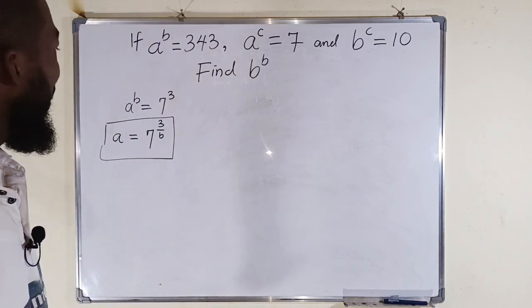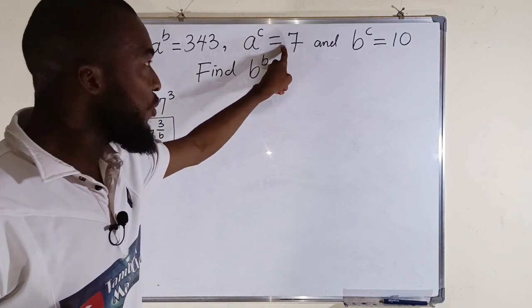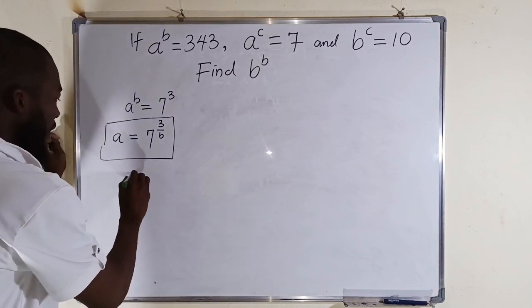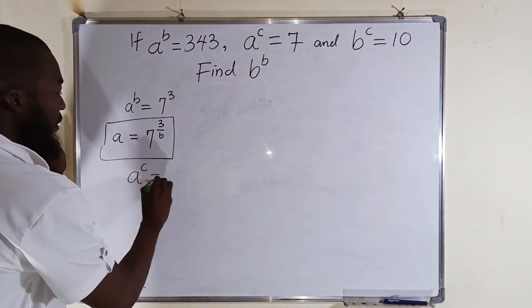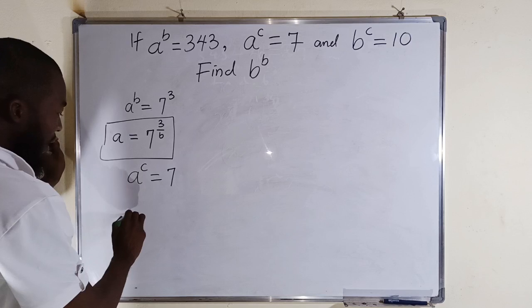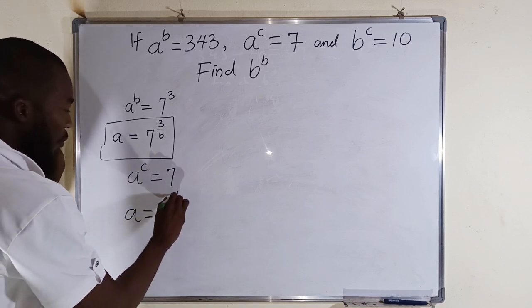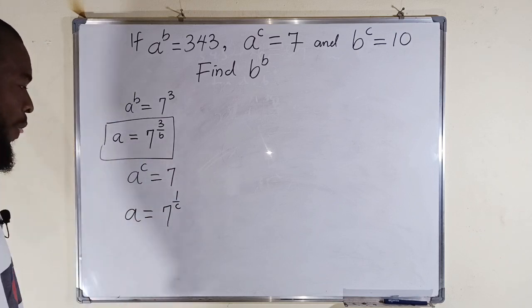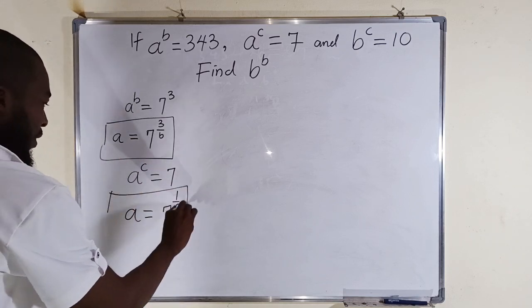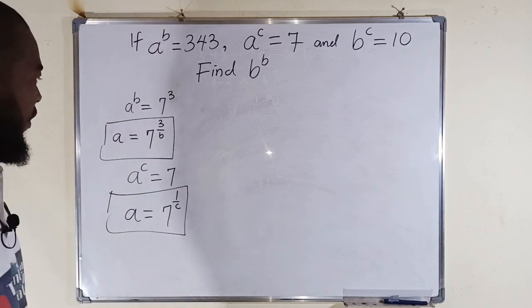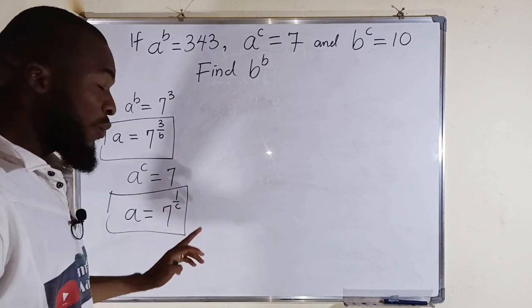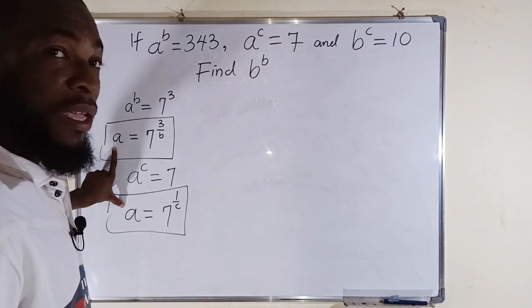Let us also make a the subject from the second equation. We have that a to the power of c is equal to 7, which implies that a is equal to 7 to the power of 1 divided by c. Second important equation. You can see both this equation and this equation are the same because they are equal to a.